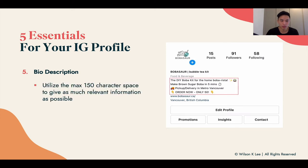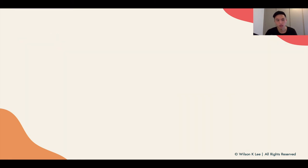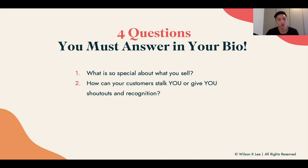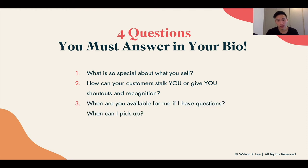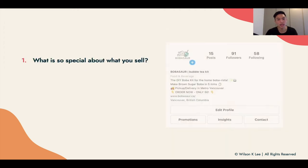Lastly, your bio description. There are only 150 characters for this whole section, and we're going to optimize it and answer as many questions as possible. We're going to break it down into four different questions that you must answer. First: what is so special about what you sell? Second: how can your customers stalk you or give you shoutouts and recognition? Third: when are you available to answer questions and when can they pick up? And lastly: how do they place an order?